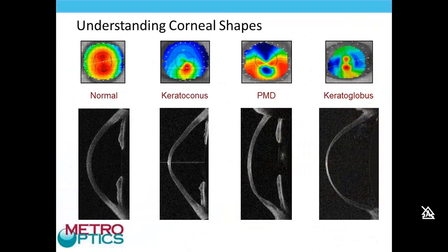It's really important, not just with the Kerasoft lens but with any lens correction for irregular corneas, that you understand the corneal shape you're working with. Here we have topographies and OCT images of irregular corneas, starting with a normal with-the-rule cornea for comparison. When looking at keratoconus and pellucid, you can see where steepening occurs. I'd like to draw attention to the superior aspect of these corneas — in keratoconus and pellucid, the superior cornea is not much different from normal. Keratoglobus is a bit of an exception.